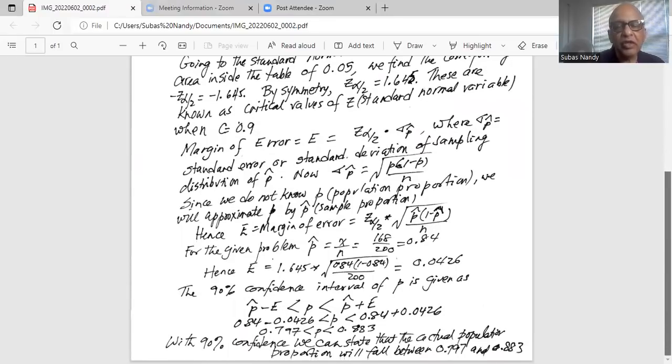So the 90% confidence interval for p population proportion is given as p hat sample proportion minus margin of error on the left boundary and the right boundary is p hat plus margin of error, 0.84, which in this case works out as 0.84 minus 0.0426 for the left boundary. And for the right boundary, it is 0.84 plus 0.0426.